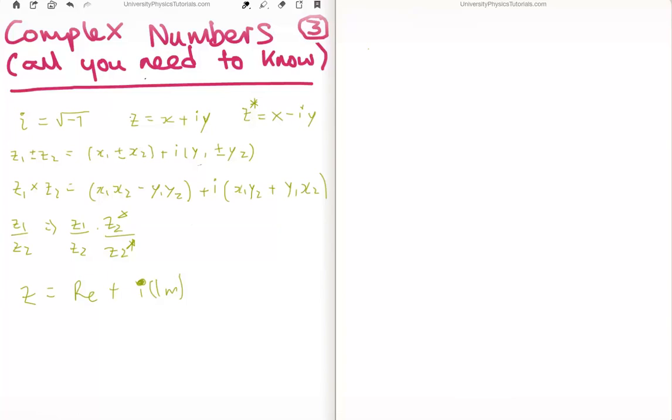So just in some revision, what we've seen so far is the following. We've defined iota as a complex number as the square root of minus 1. And we've also defined a general complex number existing on the complex number plane as x plus i times y.